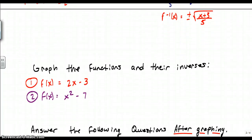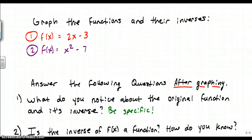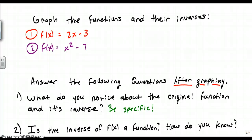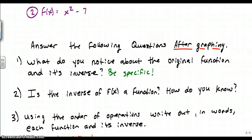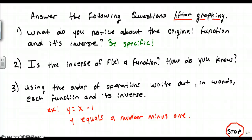Now we're going to look at inverses and their original functions graphically. Pull out some graph paper and pause the video. Graph f of x equals 2x minus 3 and f of x equals x squared minus 7. Then figure out the inverse of each function and graph each function's inverse on the same graph paper — two separate graphs, one for each function with its inverse. Then answer the three questions shown, and come back to the video when you're finished.